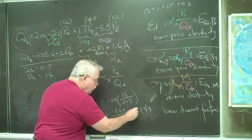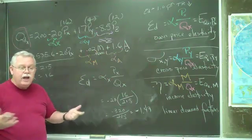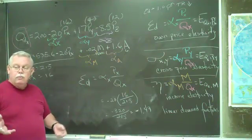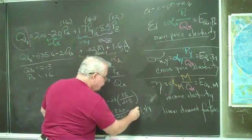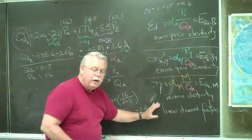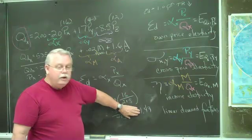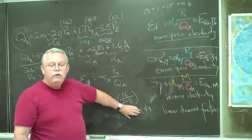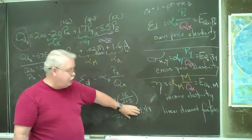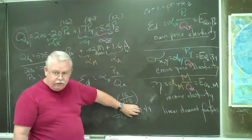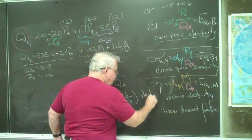It's important to note that it does have a negative sign. Every one of these own price elasticities is always a negative number, because when price goes up, quantity goes down and vice versa. But we tend to ignore the negative — we take the absolute value of this number. If the coefficient is 1.49, the demand is elastic because it's greater than 1. We conclude that we have an elastic demand for our product.